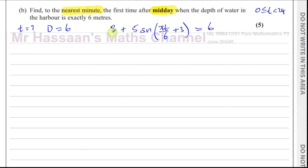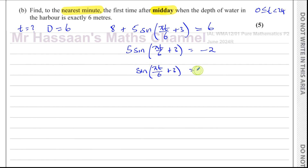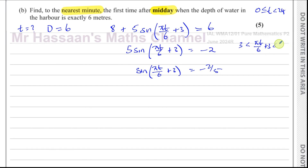Let's rearrange step by step: subtract 8 from both sides and divide by 5, giving sin(πt/6 + 3) = −2/5. We also need to change the limits accordingly. Multiplying 0 by π/6 and adding 3 gives a lower limit of 3. Multiplying 24 by π/6 and adding 3 gives an upper limit of 4π + 3.